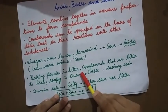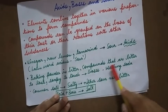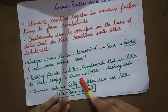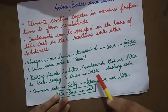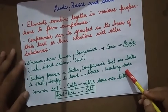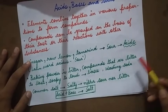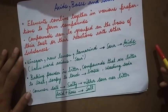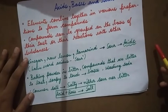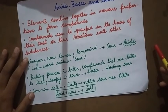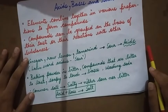Baking powder is bitter. Compounds that are bitter to taste and soapy to touch are known as bases. Washing soda is also a base. Substances that are bitter to taste are basic in nature and are known as bases.